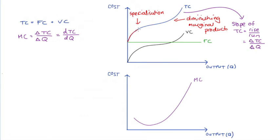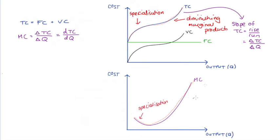In the first section where the slope gets flatter as quantity increases, this corresponds to a decrease in slope — so marginal cost is decreasing in this region. Where the slope gets steeper, marginal cost increases. Initially our firm enjoys benefits of specialization, so the marginal cost of each unit produced decreases. Once we hit our capacity constraints because of our fixed inputs, each additional unit of output becomes more and more expensive to produce — this is diminishing marginal product.